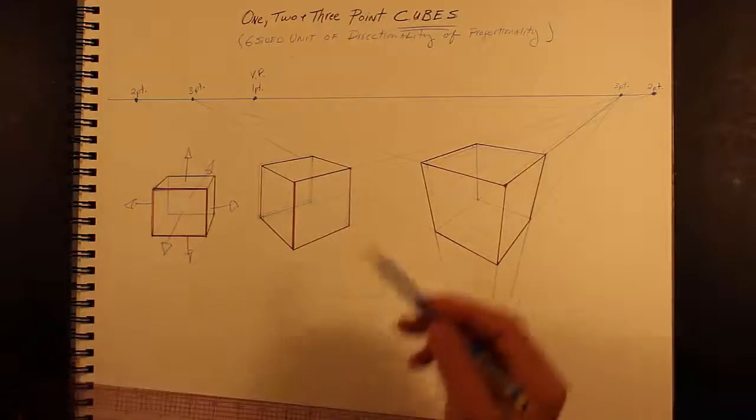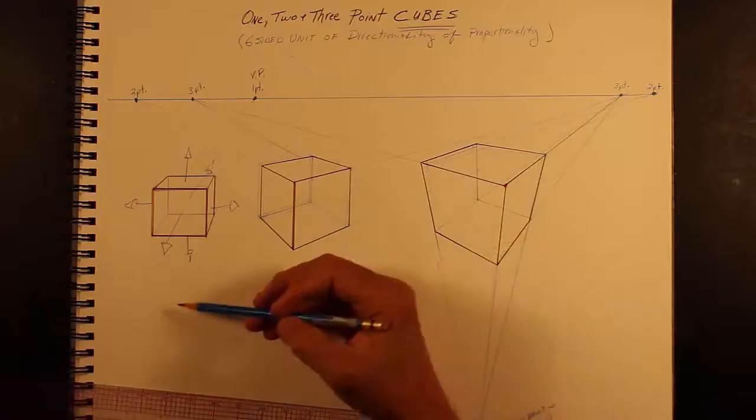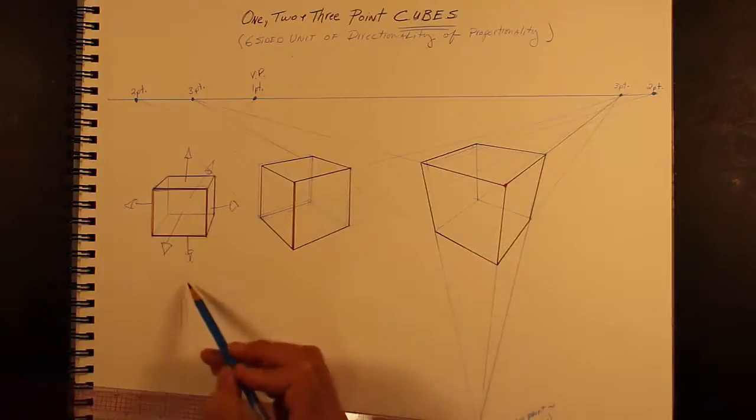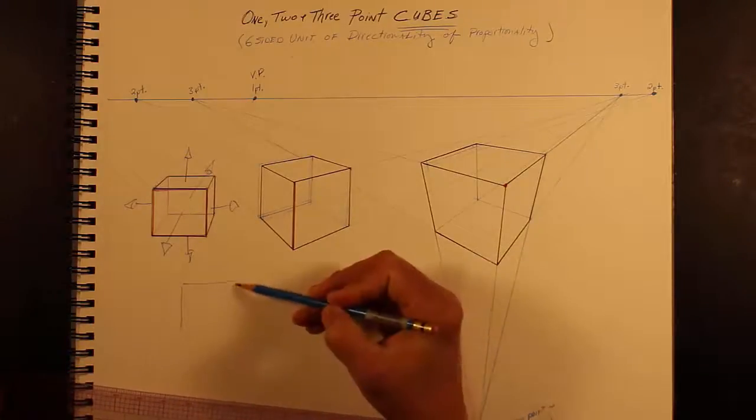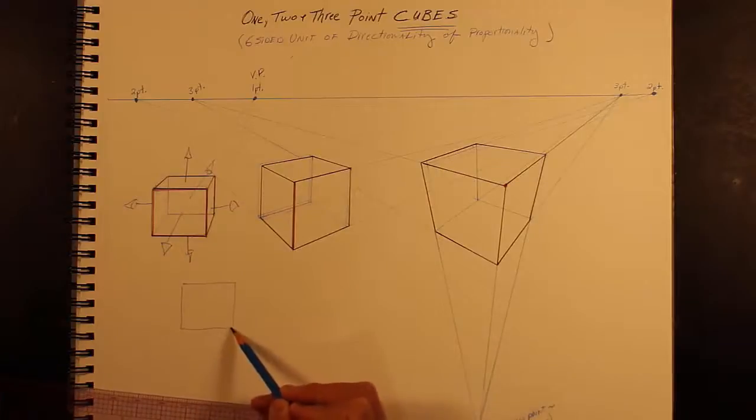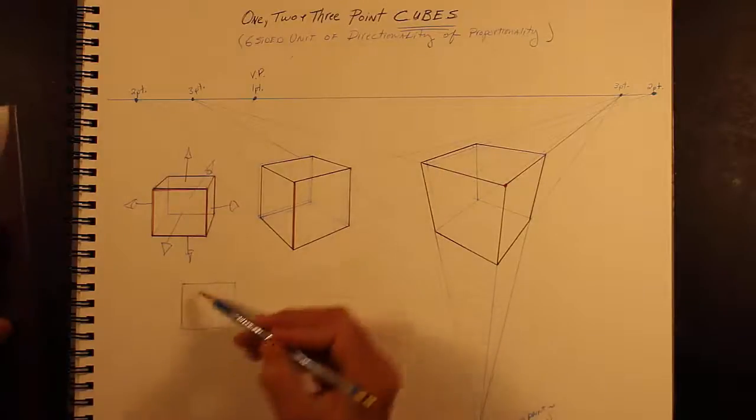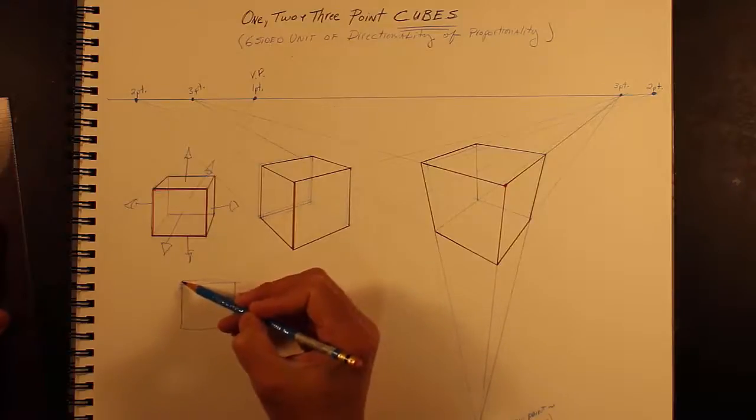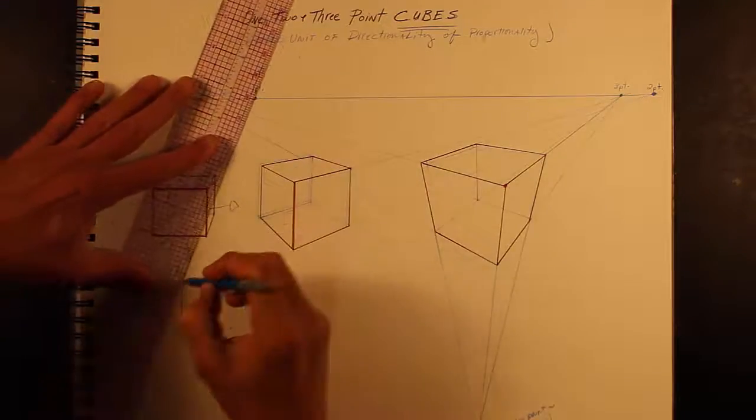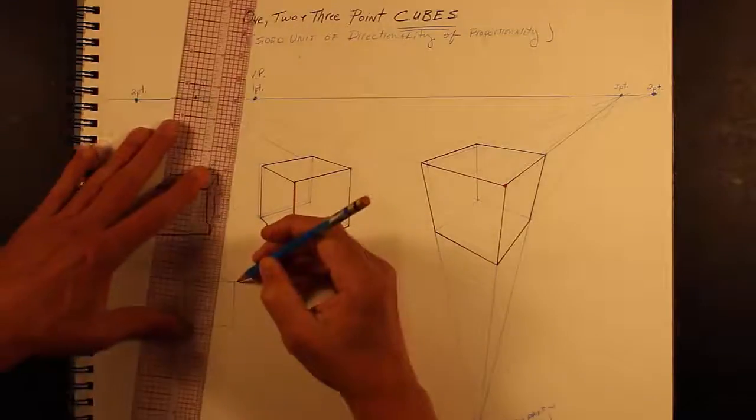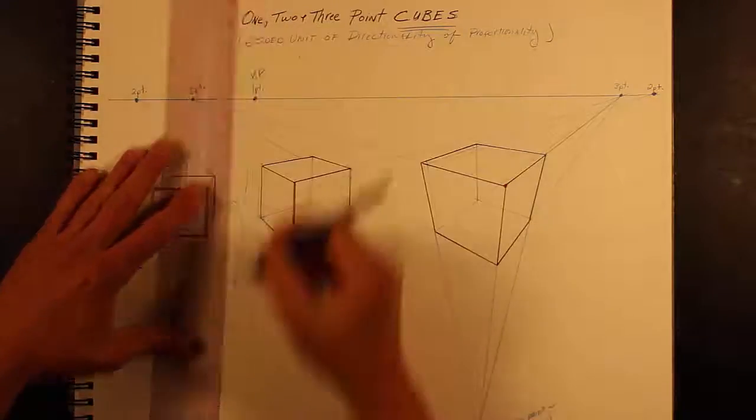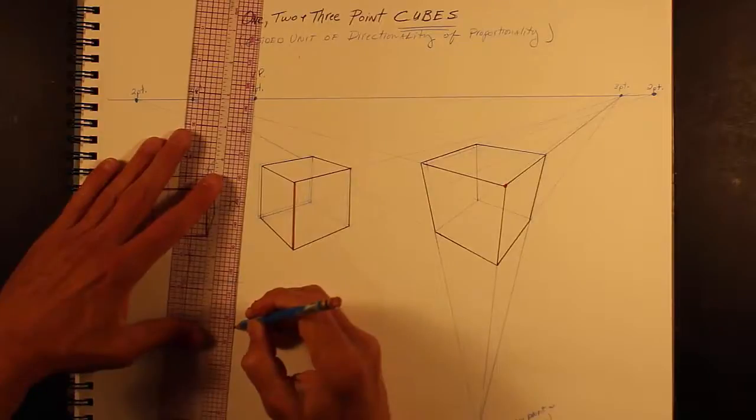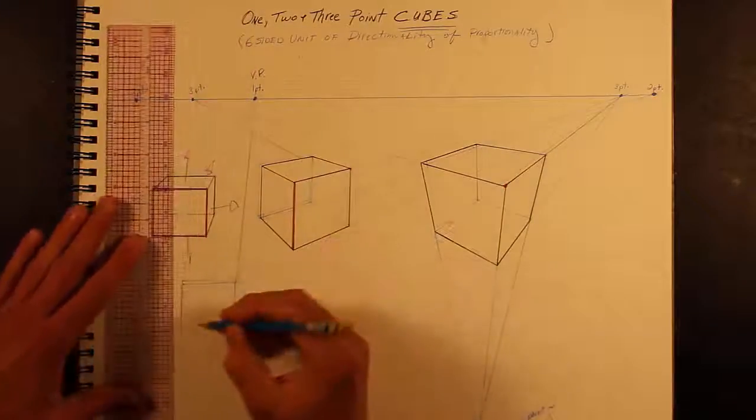So I'm going to start a new one right here. And notice that I'm doing it freehand at first because I'm just trying to guess the proportions, the location on the page, and then I can quickly just put in the convergence lines, and that's what these are called, convergence lines.